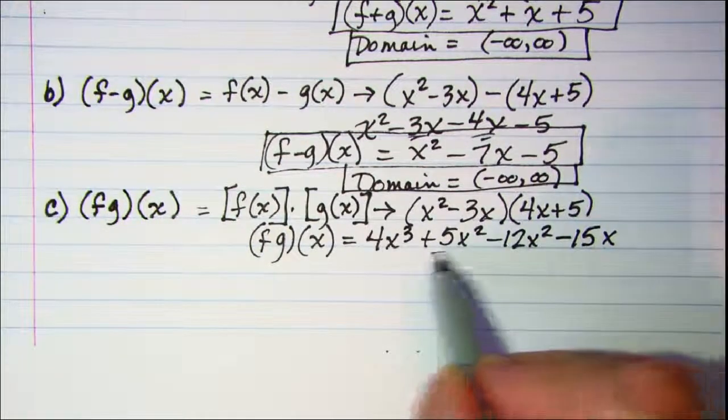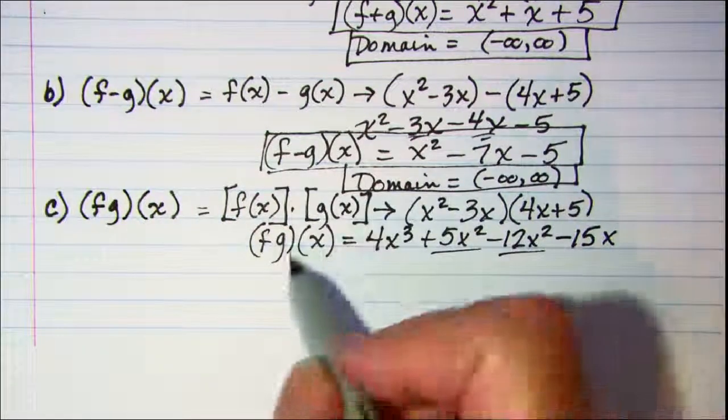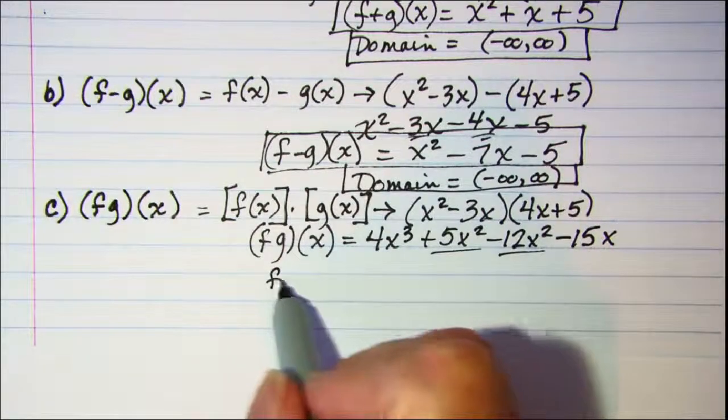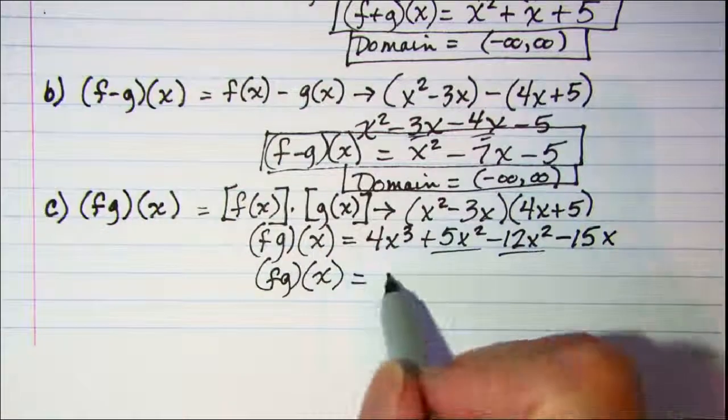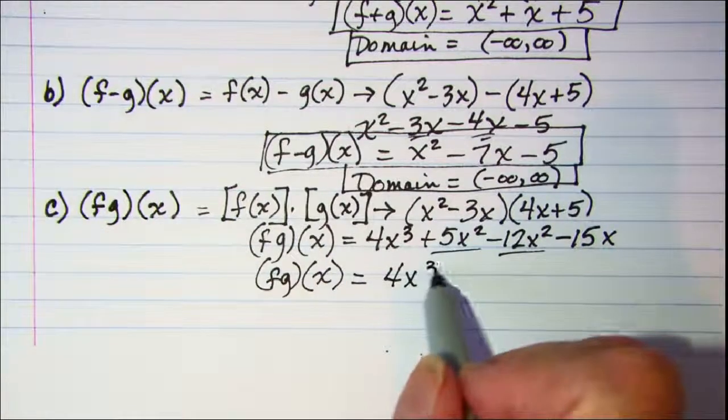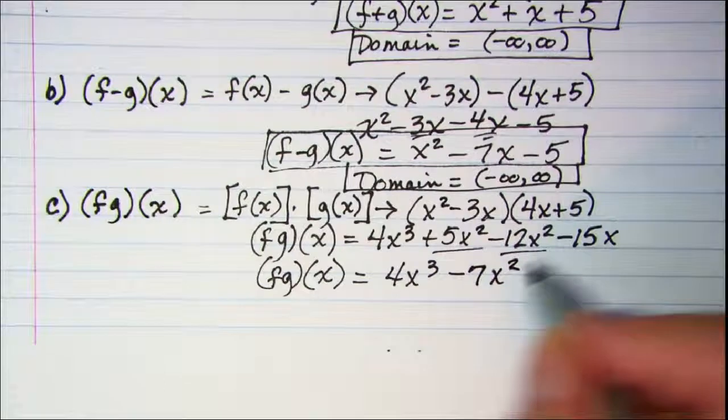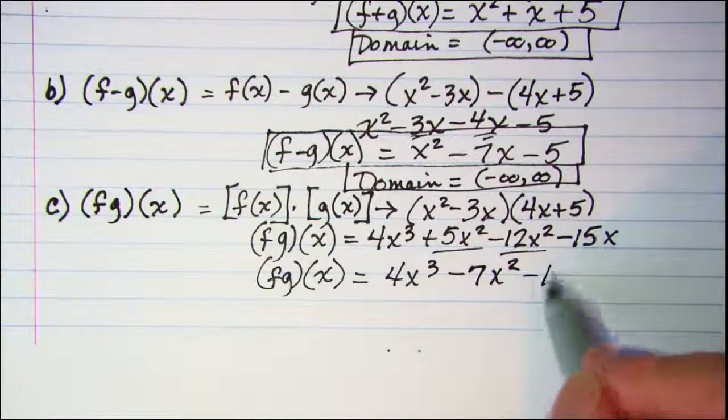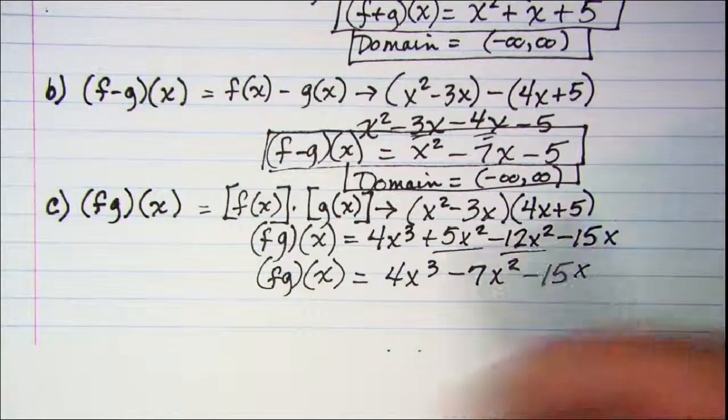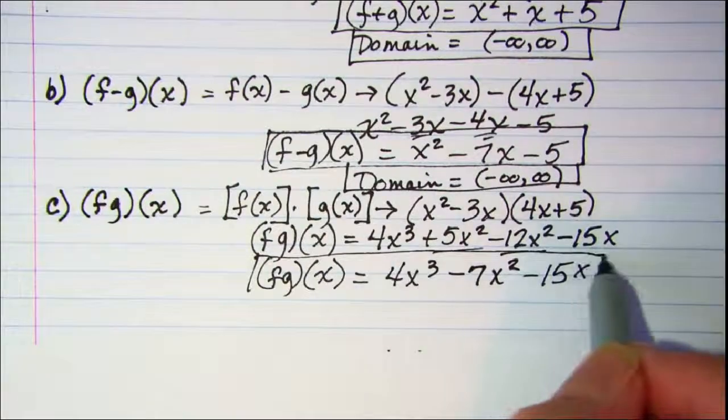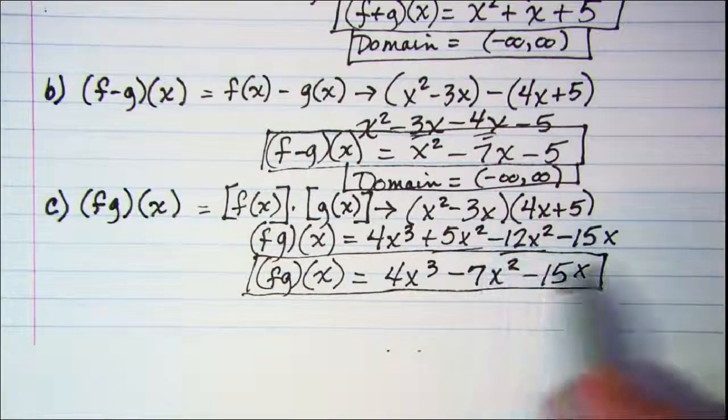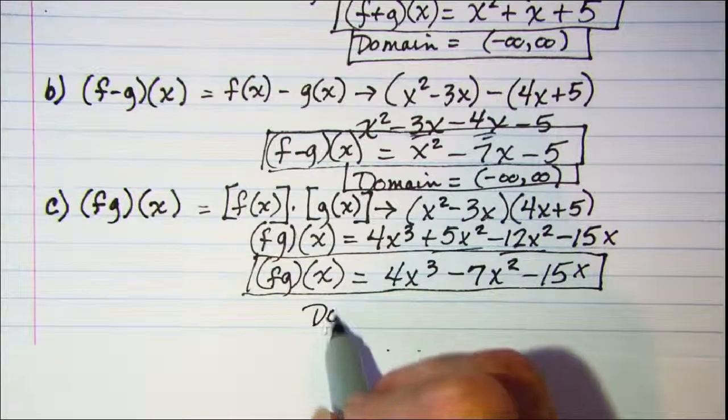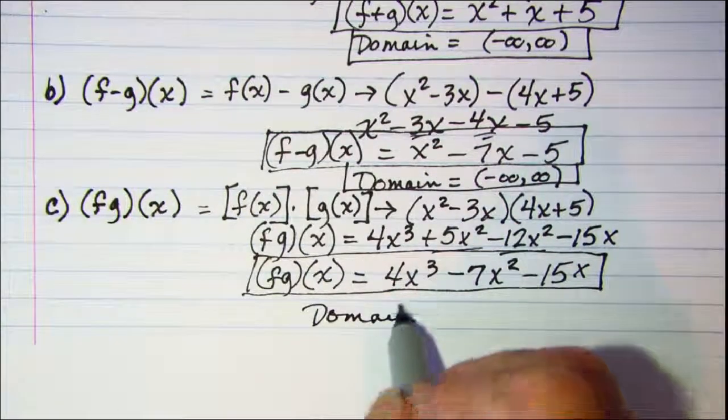We can combine these two so f times g of x is 4x cubed and then negative 7x squared and then minus 15x. The domain is all real numbers.